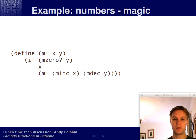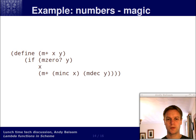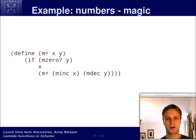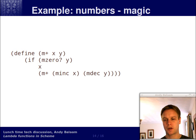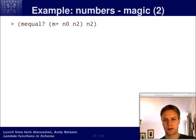mplus takes in two arguments, and the body of this procedure is an if expression. If y is m0, we return x. Otherwise, we return the result of calling ourselves recursively, having called mink on x and mdec on y. I'll explain that in a second.